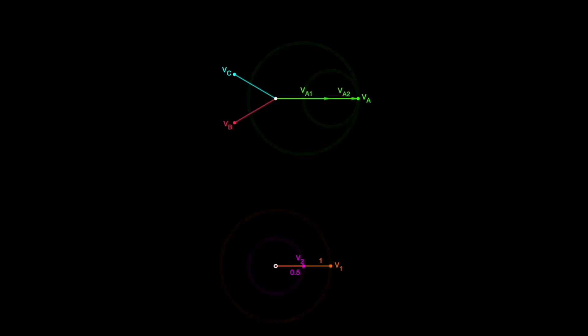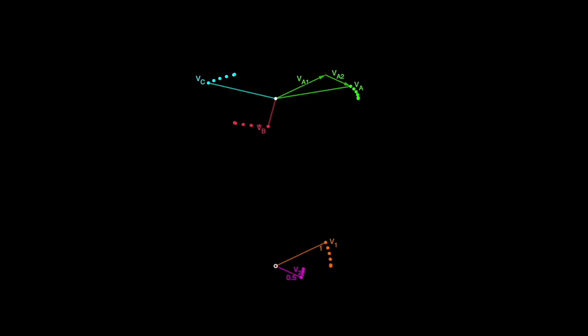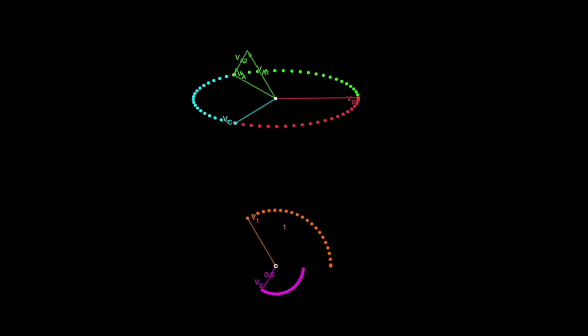Now I'll rotate the positive and negative sequence phasors at the same time but in opposite directions. The ABC phasors now trace out a path of an ellipse whose center shares the same center as the phasors.